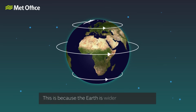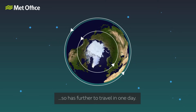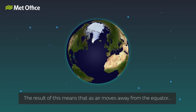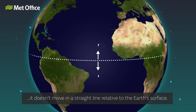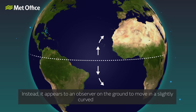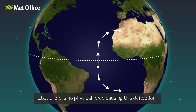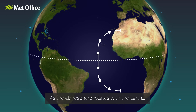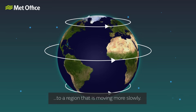This is because the Earth is wider at the equator, so it has further to travel in one day. The result of this means that as air moves away from the equator, it doesn't move in a straight line relative to the Earth's surface. Instead, it appears to an observer on the ground to move in a slightly curved direction. But there is no physical force causing this deflection — it is just due to the air flowing from a region that is moving faster to a region that is moving more slowly.